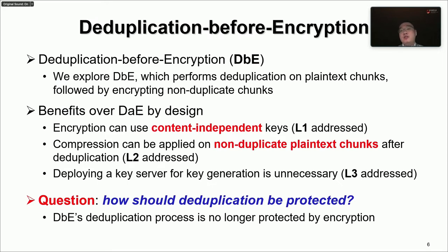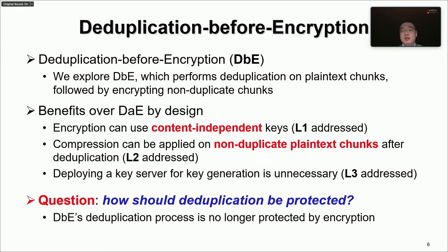In this paper, we explore a new paradigm called Deduplication Before Encryption, DBE, which performs deduplication on plaintext chunks followed by encrypting only non-duplicates. DBE offers several benefits over DAE. Since deduplication is applied first, DBE can encrypt each non-duplicate plaintext chunk with a content-independent key as in traditional symmetric encryption without compromising deduplication. This avoids generating and storing per-chunk content-derived keys and reduces key management overhead. Second, DBE can apply compression to non-duplicate plaintext chunks after deduplication for extra storage saving, followed by encrypting the compressed chunk. Third, since DBE uses content-independent keys, it no longer needs a key server, removing the single point of attack.